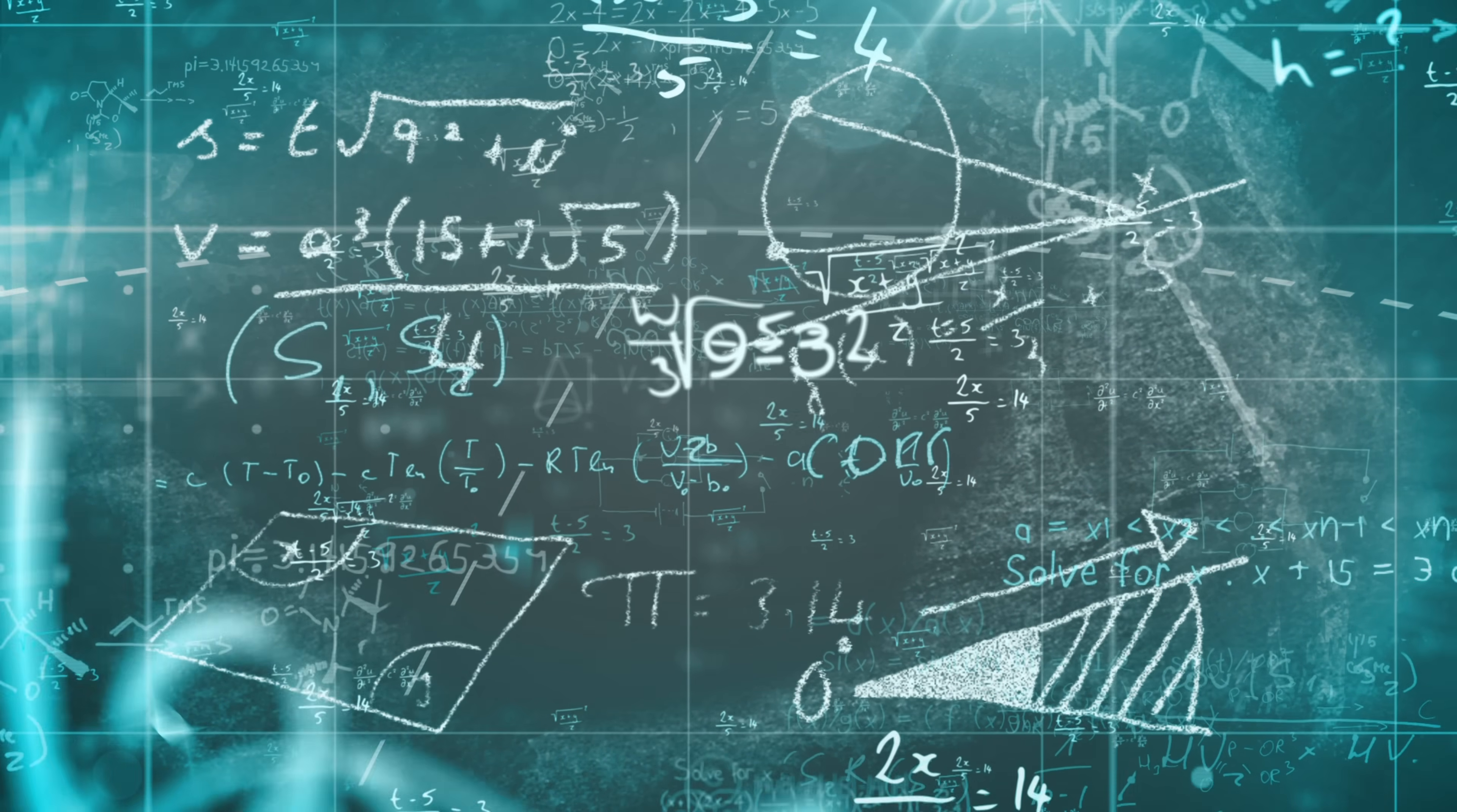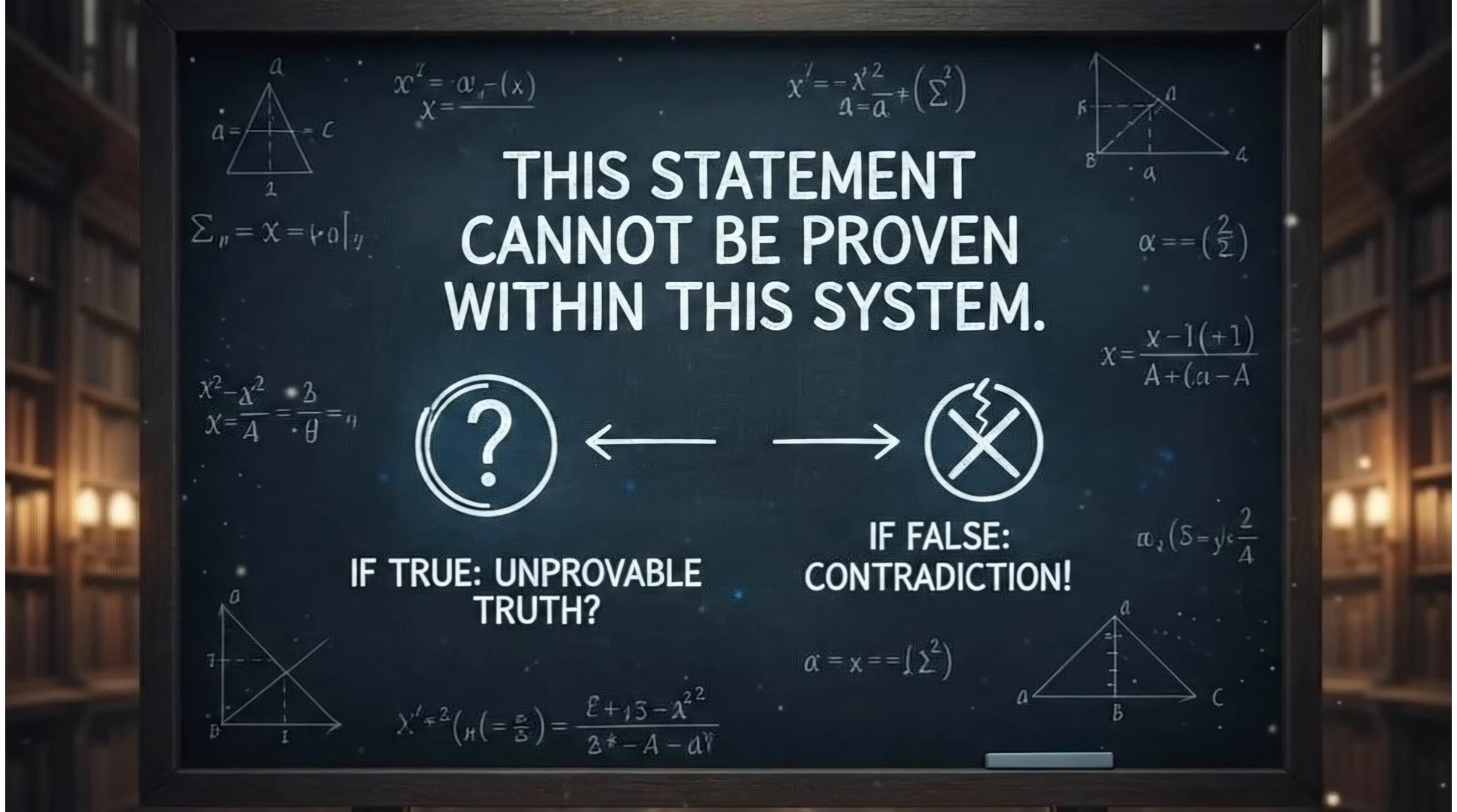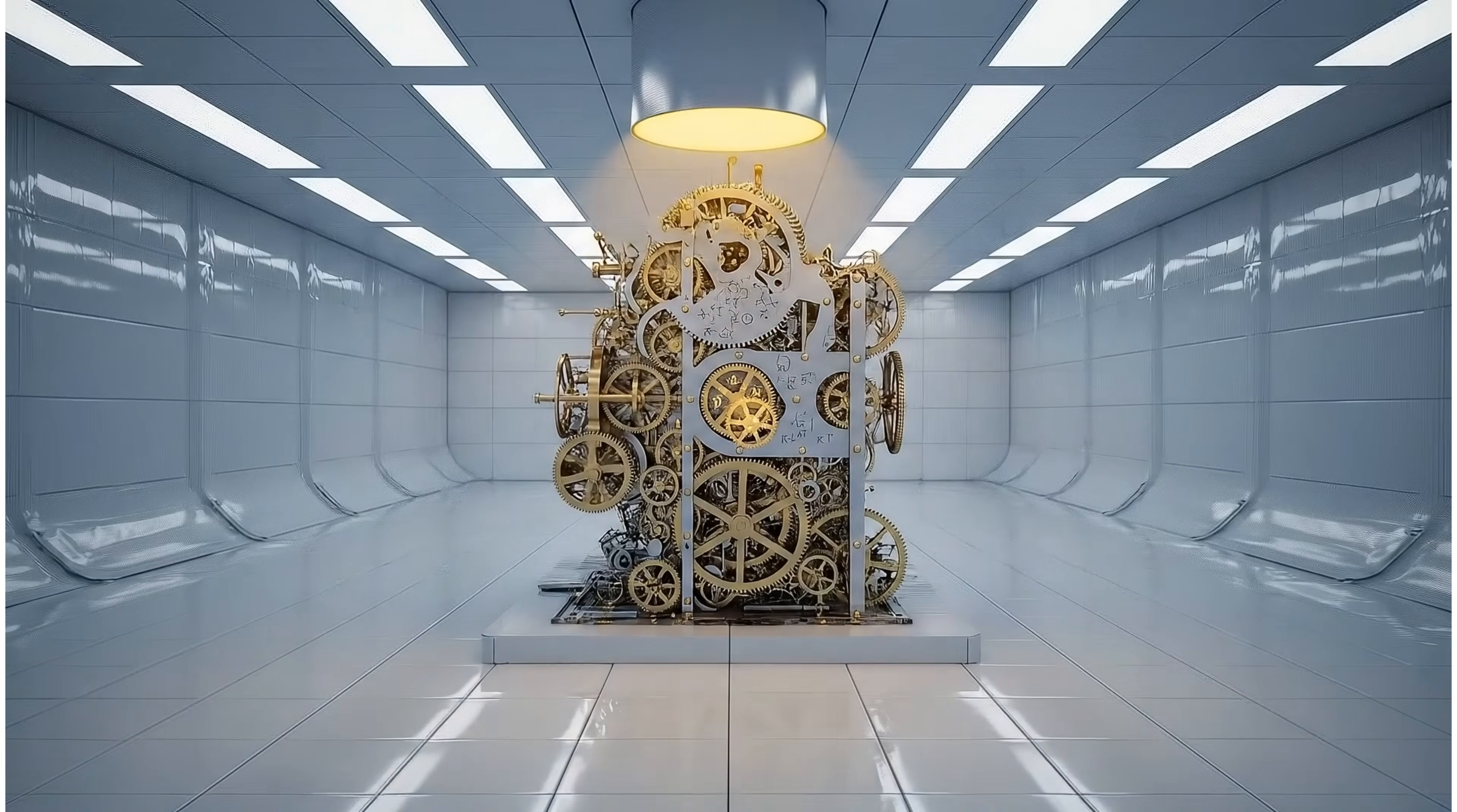Gödel's genius was to use mathematics to talk about itself. He created a statement that, when translated from the language of logic, essentially said, this statement is unprovable. Think about that. If the statement is true, then it's an example of a true statement that the system cannot prove. But if the statement is false, it means it is provable, which leads to a contradiction.